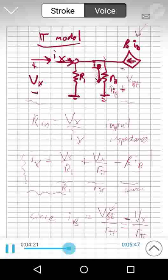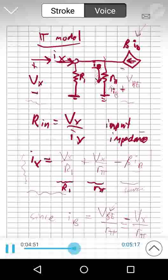At this point, we can actually write down what is IX. Because IX is really key to calculating the input impedance. IX is just equal to the current through R1, the current through R pi, and the current to the dependent source. So that's just VX divided by R1 plus VX divided by R pi minus beta times the base current.